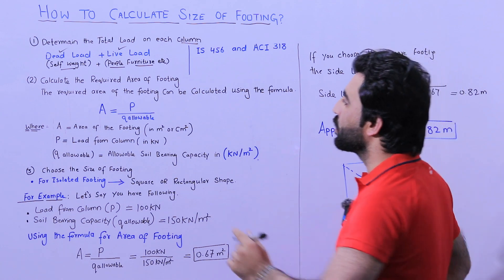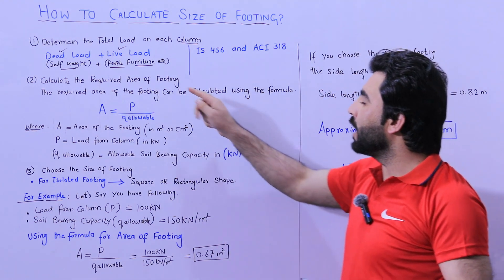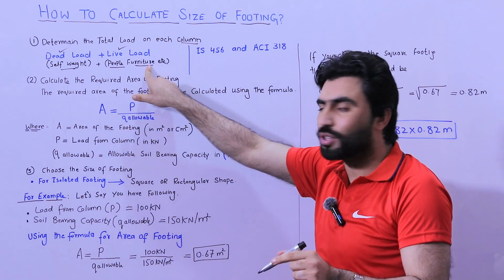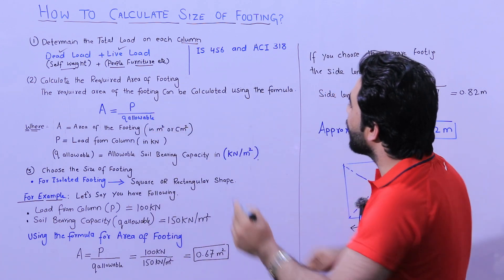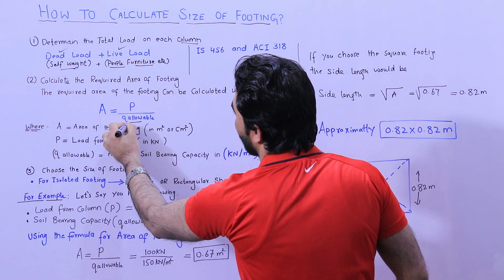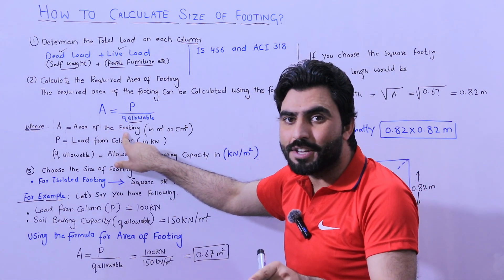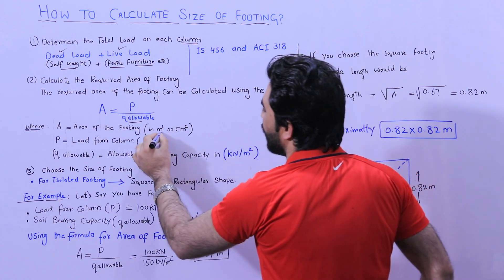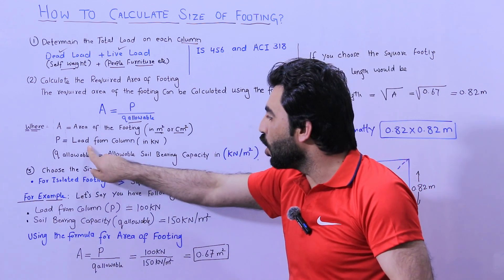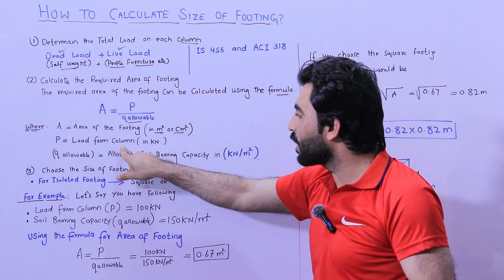We will find the size of the footing from that. After calculating dead load and live load, we find the load on each column, then calculate the required area of the footing according to this load. The required area of the footing can be calculated using this formula: A = P / Q_allowable. Here, A is the area of the footing in mm², m², or cm². P is the load from the column in kilonewtons.